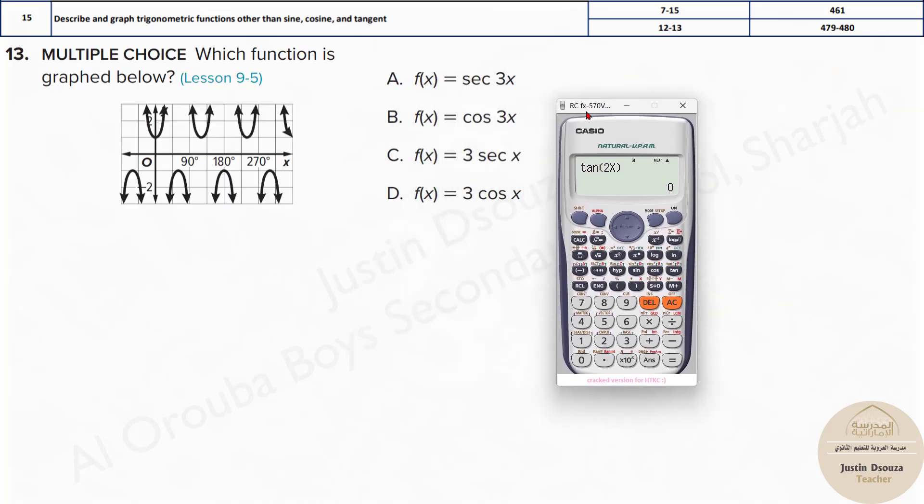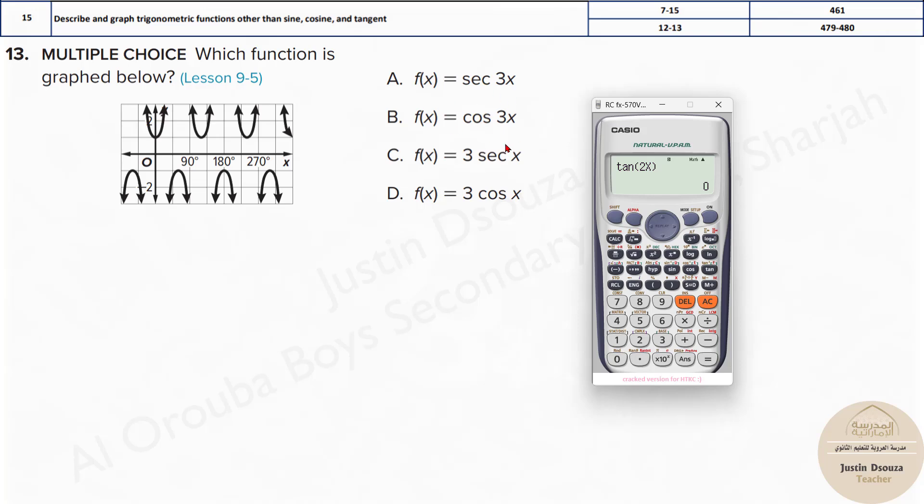Now here they've given us the graph and asked which function it is. Don't solve for all these functions and then check out the graph. You can easily eliminate a few graphs. It is not a cosine function. Why? Because the cosine graph is continuous. We've seen cosine graphs many times. Here the secant graph—yes, this is obviously secant. If it was secant and cosecant, then it's a little tricky. But this is secant. It starts from here. Now, what is the amplitude here? It's 3. But look at the amplitude here. It's 1.